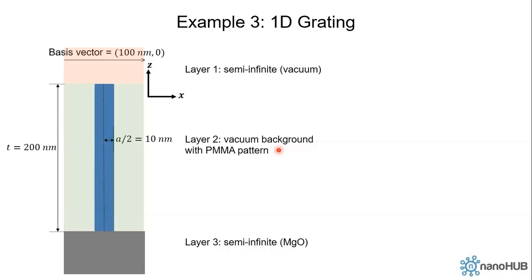What's interesting is the middle layer. It's the PMMA pattern in the vacuum background. When we define the layer, we first define a vacuum layer with a thickness of 200 nanometers, then we multiply the pattern. The basis vector is 100 nanometer, zero, which is pointing in the x direction.